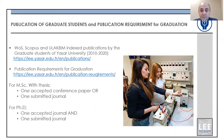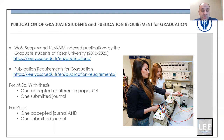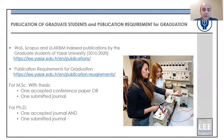For the master with thesis and PhD programs, there are publication requirements. For master with thesis, you should have one accepted conference paper or one submitted journal paper. For the PhD, you should have one accepted journal paper and one submitted journal paper — for the master with thesis one of them is enough, but for the PhD both must be satisfied.